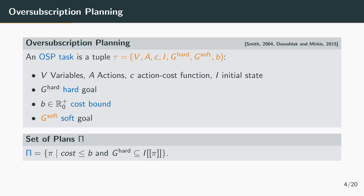In our setup an oversubscription planning task is defined as follows. It consists of a set of variables and actions, an action cost function, an initial state, a set of hard goals, an overall cost bound, and a set of soft goals. A plan for such a planning task is an action sequence which satisfies the overall cost bound and reaches the hard goals.